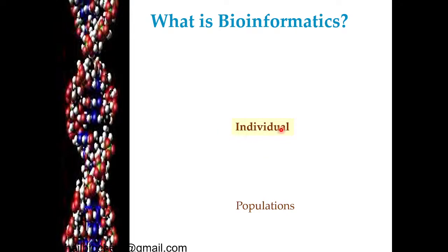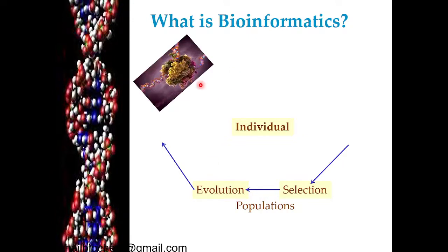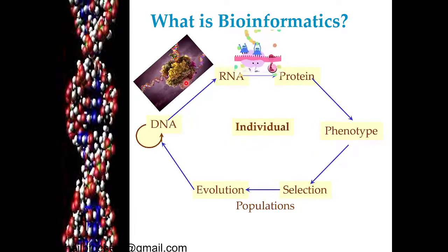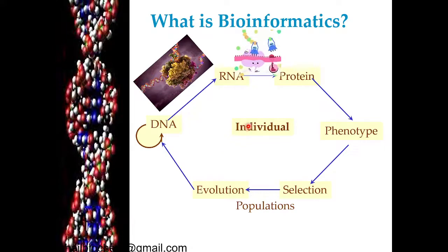An individual is a symbol of a population. In this population, evolution happens and mutations happen. What happens in genes — protein synthesis happens — it develops new phenotypic characteristics. These species are different. This type of flow also occurs in your population, and to understand this process, bioinformatics is very helpful.